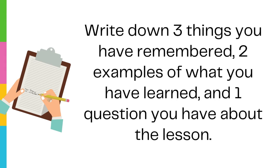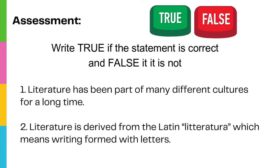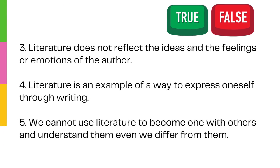Write down three things you have remembered, two examples of what you have learned, and one question you have about the lesson. For our final activity, write true if the statement is correct and false if it is not. Number 1: Literature has been part of many different cultures for a long time. Number 2: Literature is derived from the Latin 'literatura,' which means writing form with letters. Number 3: Literature does not reflect the ideas and the feelings or emotions of the author. Number 4: Literature is an example of a way to express oneself through writing. Number 5: We cannot use literature to become one with others and understand them even if we differ from them.